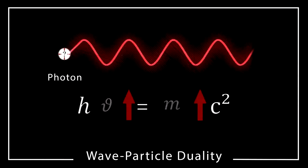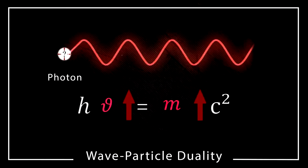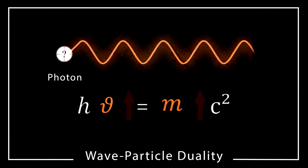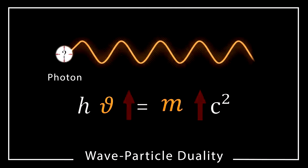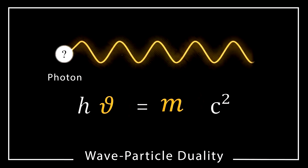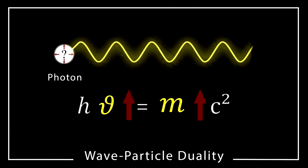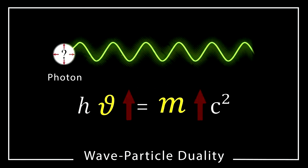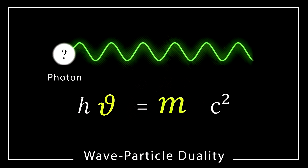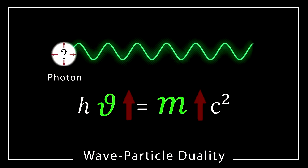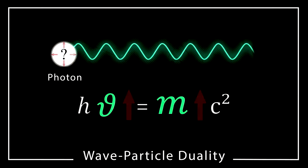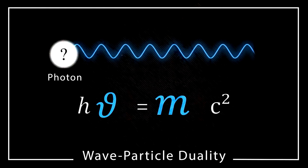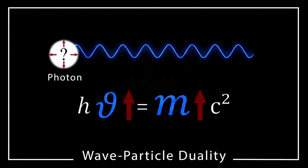What is weird is that, according to the wave-particle duality concept, the mass of violet photon is twice the mass of red photon. But even by sight and by feeling, the red light is heavier, stronger, and warmer than the violet light.